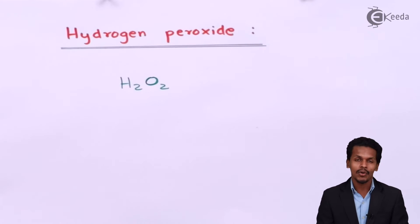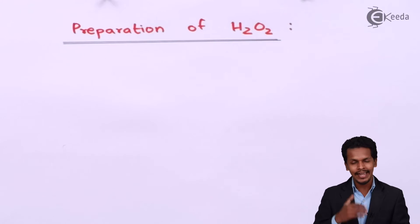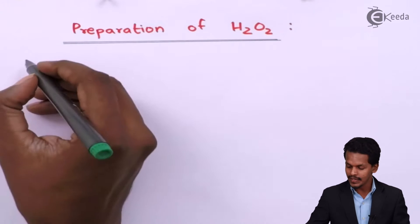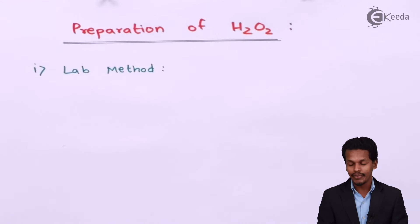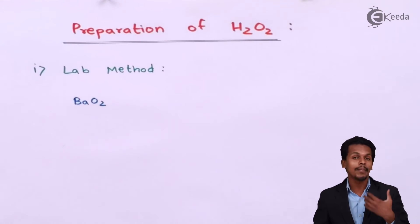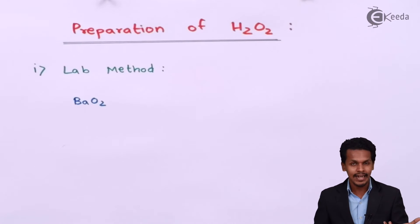Now let us discuss about the preparations of H2O2. There are various methods to prepare hydrogen peroxide. The first method I am going to talk about is the lab method — how can we prepare H2O2 in the laboratory. The reaction we need uses BaO2, which is known as barium peroxide, but it should not be anhydrous; it should be hydrated.